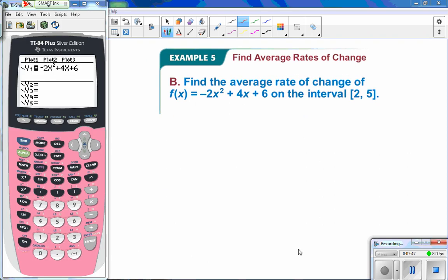Alright, so for the next one, find the average rate of change for this problem. Again, to find the slope, we're going to take f of 5 minus f of 2 and divide by 5 minus 2. This time, however, I'm going to have my calculator do the work. So I typed in my function.